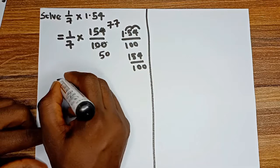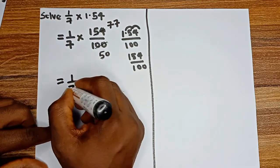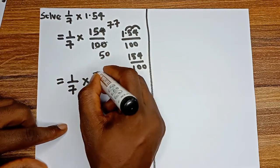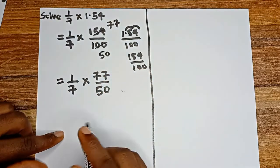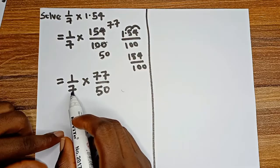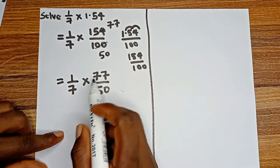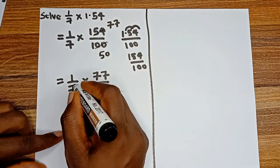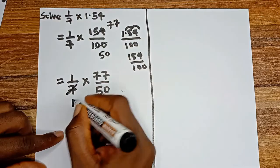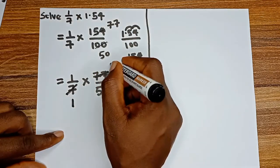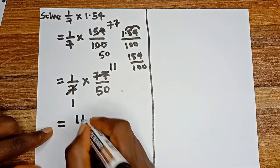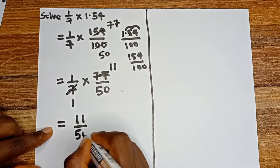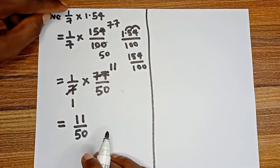Next, 7 can go into 7 and 7 can go into 77. If 7 goes into 7, we have 1. And 7 goes into 77, we have 11. So our answer is going to be 11/50. So the answer to this problem is 11/50.